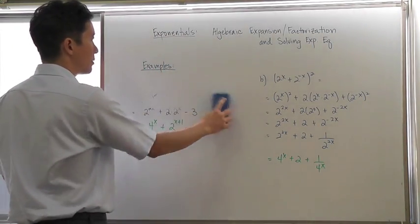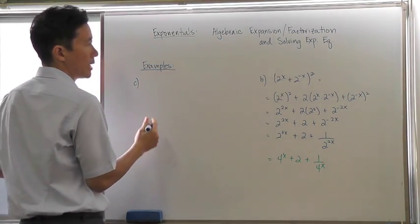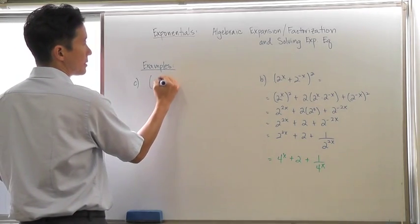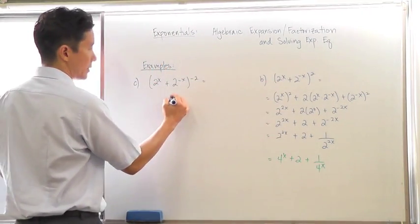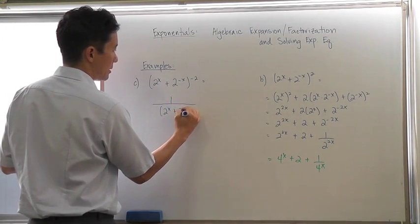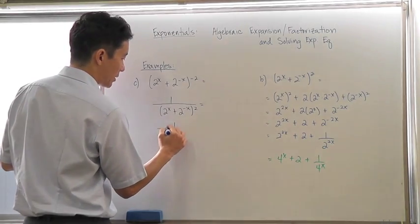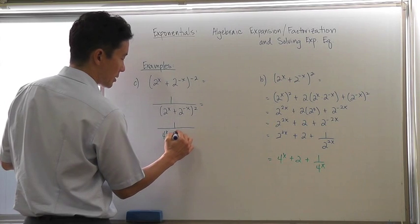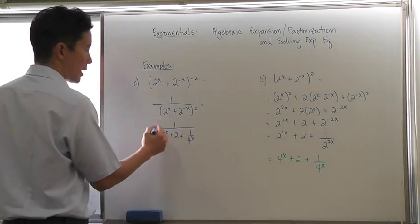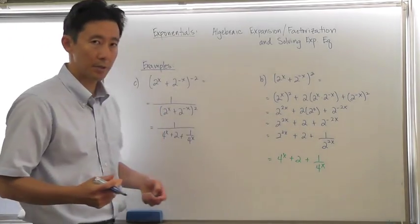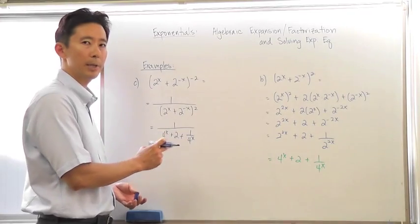Now let's take a look at one more example with regards to expansion and factorization — this same problem but raised to the negative 2 power. So this is 2 to the x plus 2 to the negative x, raised to the negative 2 power. We've already done this, so we can use the result from the previous example. This becomes 1 divided by 4 to the x plus 2 plus 1 over 4 to the x. This fraction is now a complex fraction because we have a fraction within a fraction, so we need to simplify it.